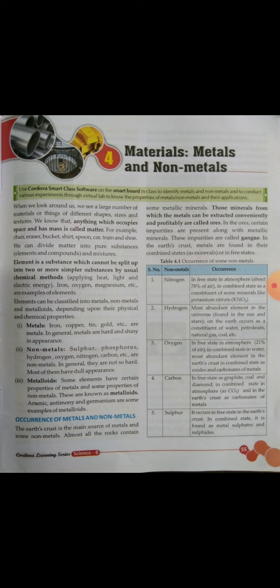Elements can be classified based on physical and chemical properties into metals, non-metals, and metalloids. Examples of metals are iron, copper, tin, and gold — they all have a shiny structure. Examples of non-metals are sulfur, phosphorus, hydrogen, oxygen, nitrogen, and carbon.